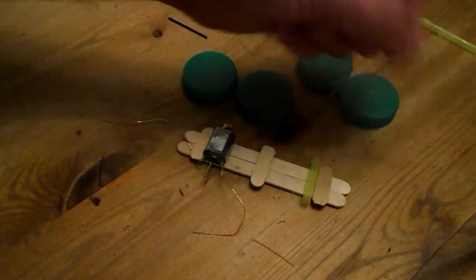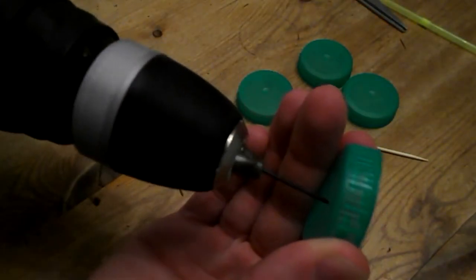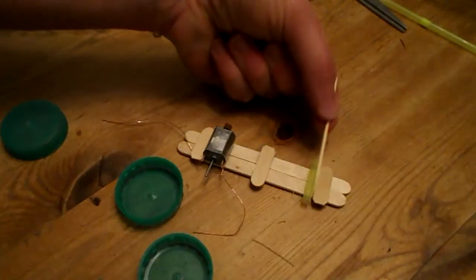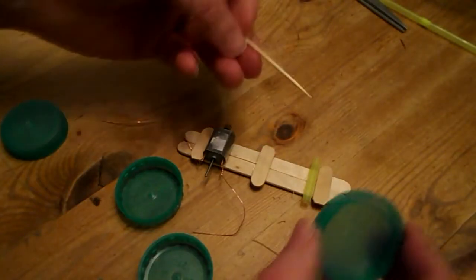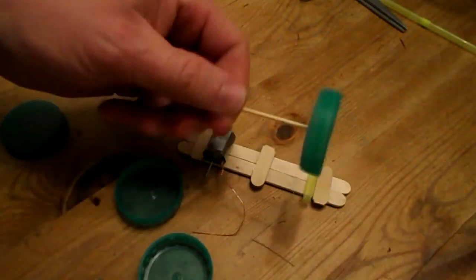For the front I'm just going to use a toothpick. So the toothpick will be the front axle right here. Double check the sides.